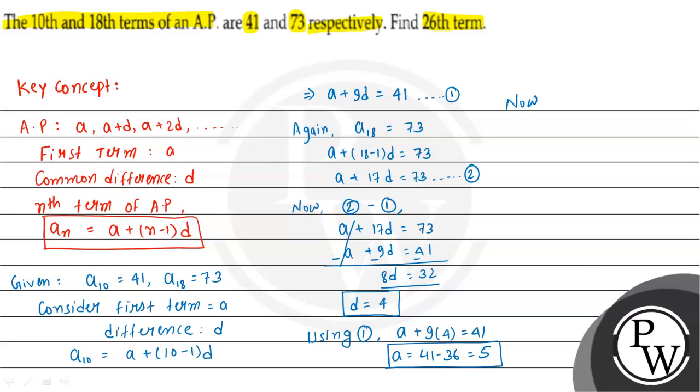Now, the 26th term A_26 equals a plus 26 minus 1 into d, which is 5 plus 25 into 4.